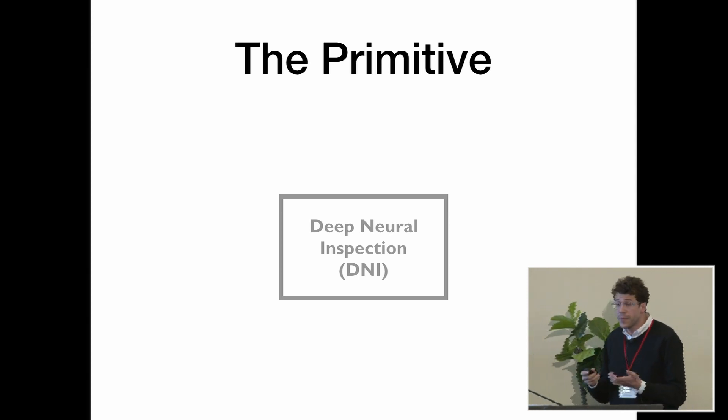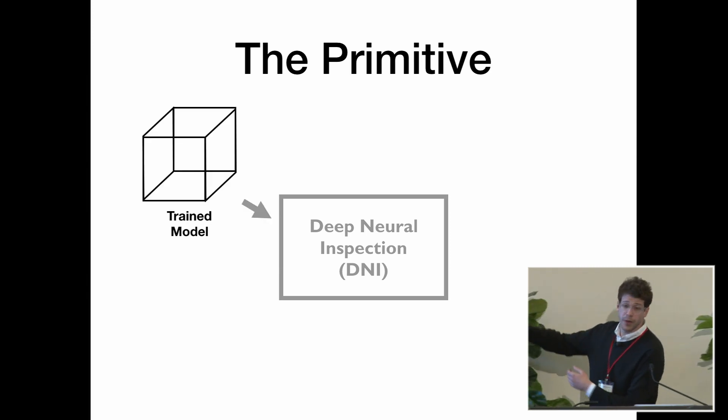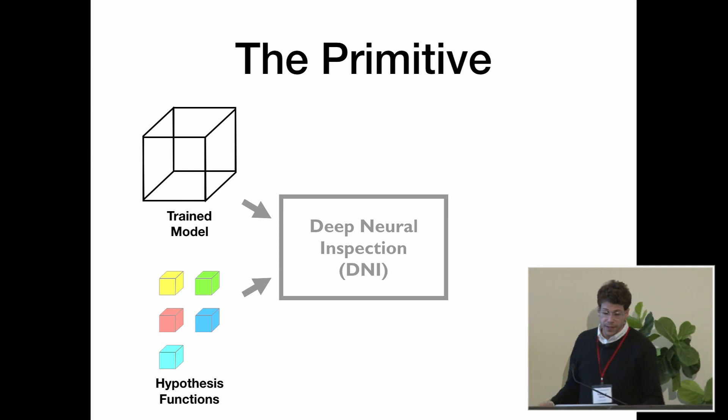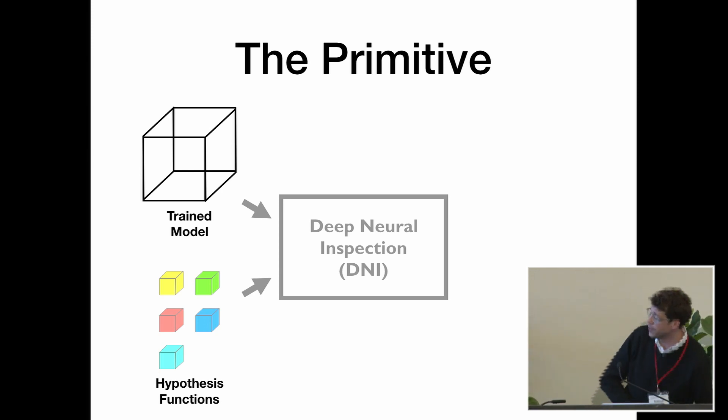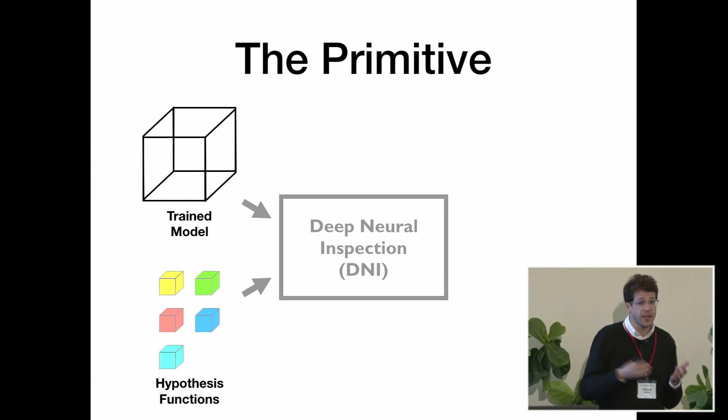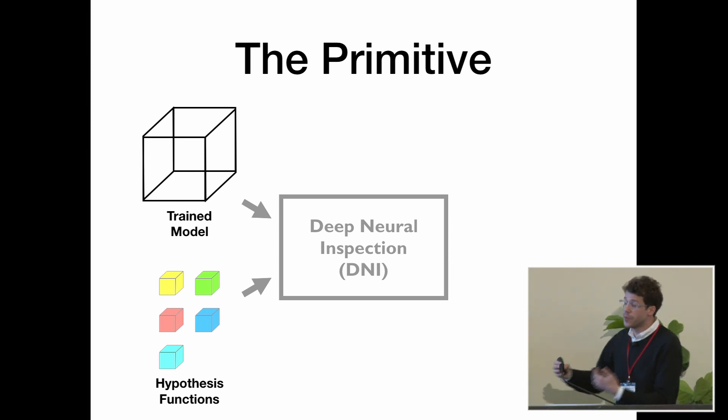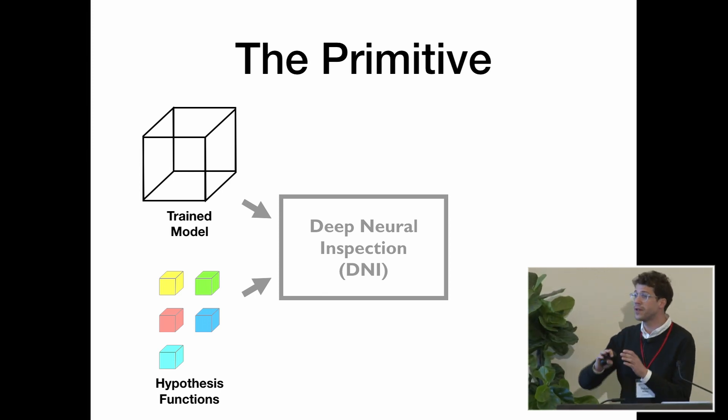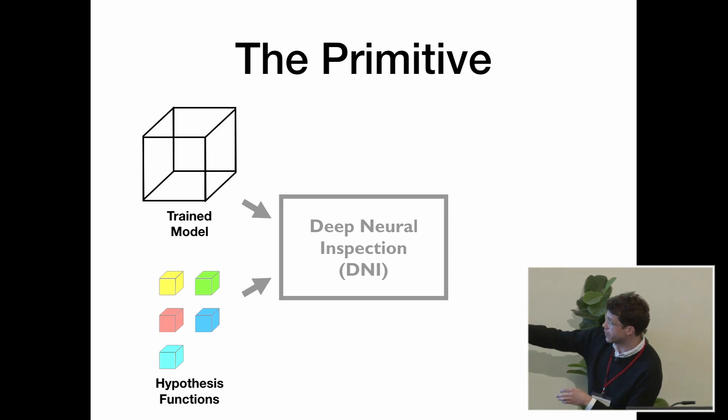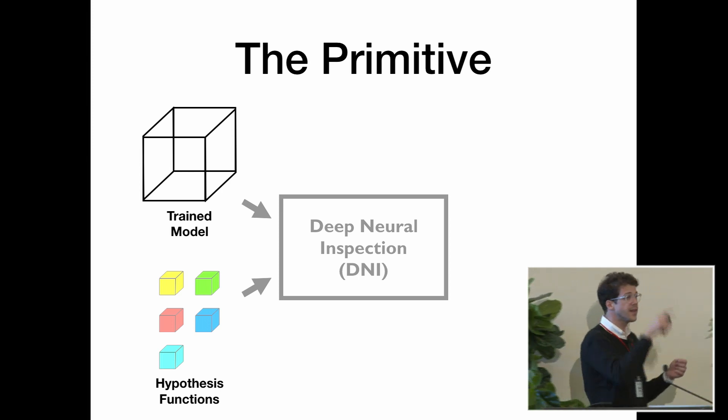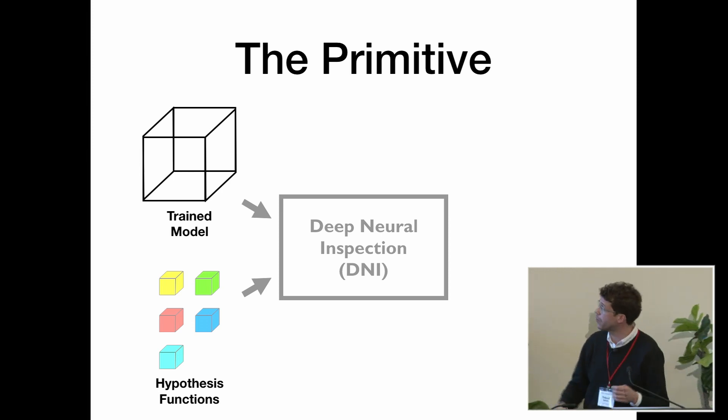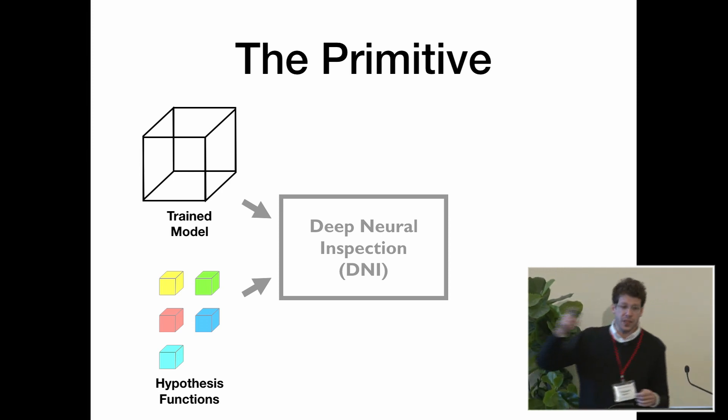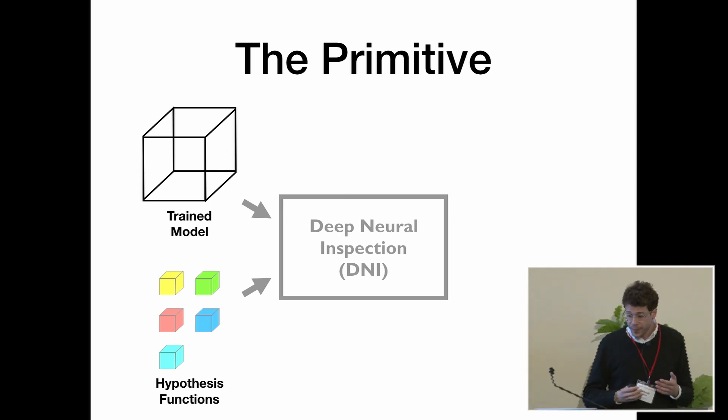Deep neural inspection. DNI is the primitive that we envision to do this. A DNI takes two inputs. It takes a trained model, like this big white box here. And it takes a smaller hypothesis function, like the little colored boxes there. What is a hypothesis function? It's a piece of Python code provided by developers, which encodes a hypothesis about what the model could be doing. For instance, our trained model is a system to detect humor. Perhaps the yellow box could be something that looks for keywords like ha ha ha. Or perhaps the green box could be a function that detects exclamation points. It would return one if there's an exclamation mark and zero otherwise. Perhaps the red box could be something that tracks volume over time. It can be anything as long as you can write it in Python.